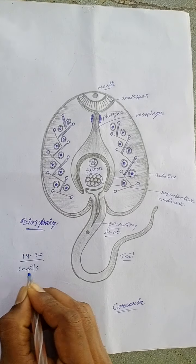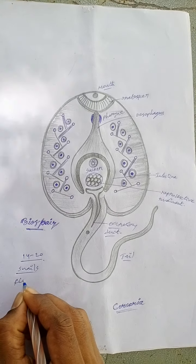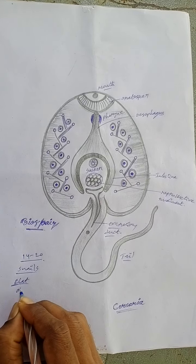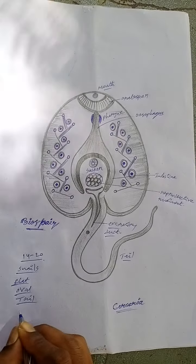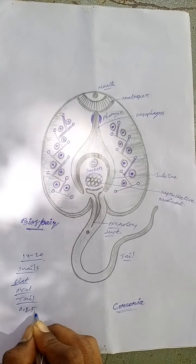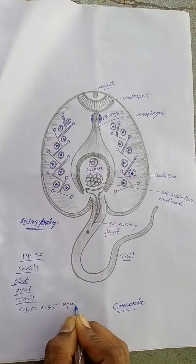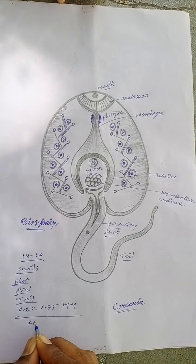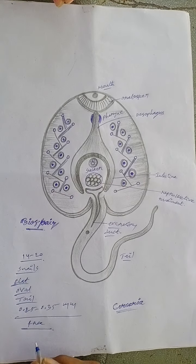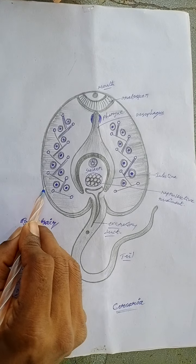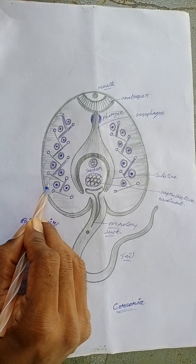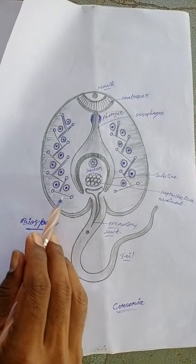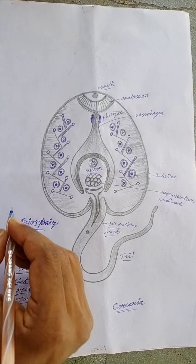The body of Cercaria is flat and oval, bearing a tail. It measures about 0.252 to 0.35 micrometers in length, and it is free swimming. The body wall consists of cuticles, muscles, and mesenchymes. It has a higher grade of organization and close resemblance with the adult fluke.